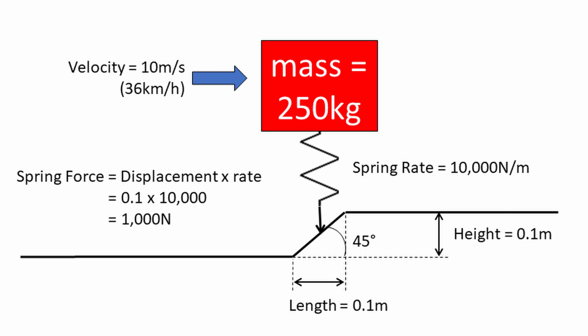When we get to the ramp, the spring is going to compress by the height of the ramp, which is 0.1 metres. We can work out how much force the spring will apply to the body by multiplying that 0.1 metres of compression by the spring rate of 10,000 — so 0.1 multiplied by 10,000 is 1,000 newtons applied to the body, which will accelerate it upwards.